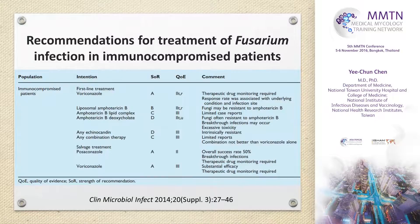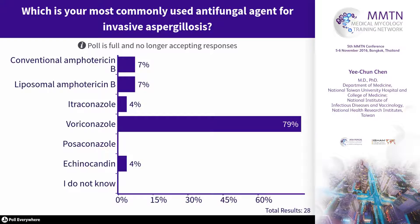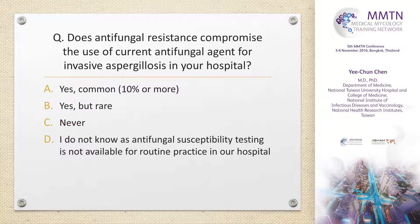According to European guidelines, voriconazole remains strongly recommended; however, TDM is required to achieve an adequate high dose. Regarding amphotericin B, there might be resistance, treatment failure, or breakthrough — so one should be very careful. Which is the most common antifungal for invasive aspergillosis in your daily practice? We follow the guideline. Does antifungal resistance compromise the use of your current antifungal therapy for invasive aspergillosis in your hospital?